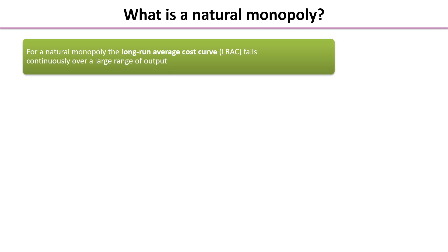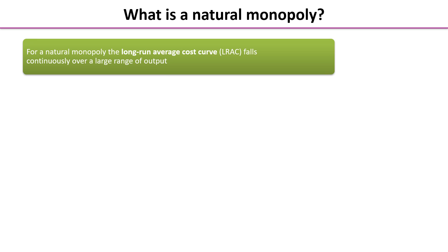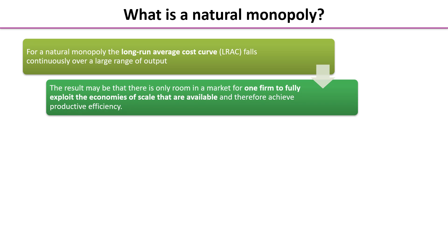So what is a natural monopoly? It's an industry where the long-run average cost curve, or LRAC, falls continuously over a large range of output. The result is that there is only room for one firm to fully exploit the economies of scale available in that market, so only one firm can be productively efficient or even get towards productive efficiency.